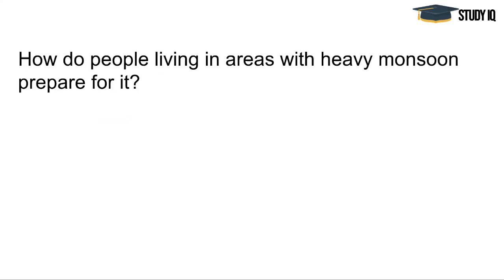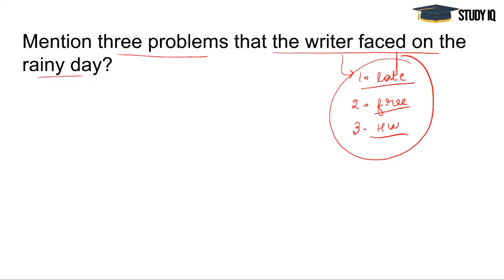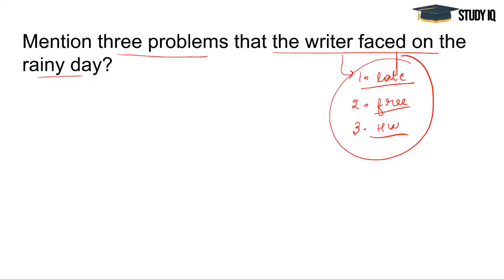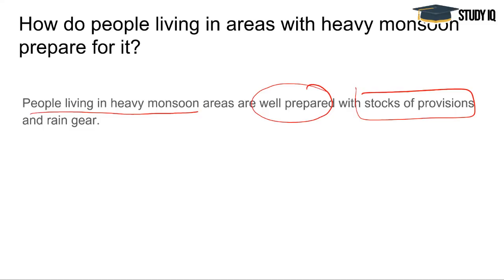Agli question: 'How do people living in areas with heavy monsoon prepare for it?' Toh yeh bhi hume last paragraph mein mil jata hai ki woh log jo heavy monsoon area mein rehte hain, woh kaise iske liye prepare karte hain — woh prepare karte hain by stocking up provisions and buying rain gear. Toh dono taraf se: pehle khane ka tiyari karke rakhte hain, stock up karke rakhte hain, aur saath hi saath unke paas rain gear bhi hota hai jo unhe baarish se bachata hai. So people living in heavy monsoon areas are well prepared with stocks of provisions and rain gear.